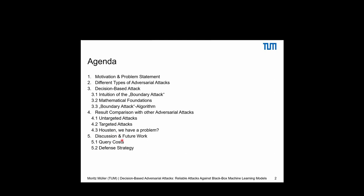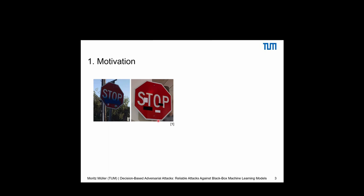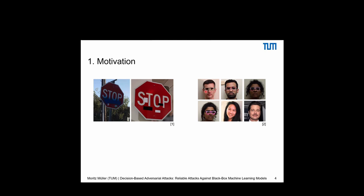We humans easily see a stop sign, but some models will tell you this is not a stop sign, but a sign recommending you to try 50 or even 100 — due to perturbations. Another real-world example of adversarial attacks are glasses that trick the model into believing it sees a different person. The model is tricked into believing all those persons are Brad Pitt. These adversarial examples are real-world security threats.